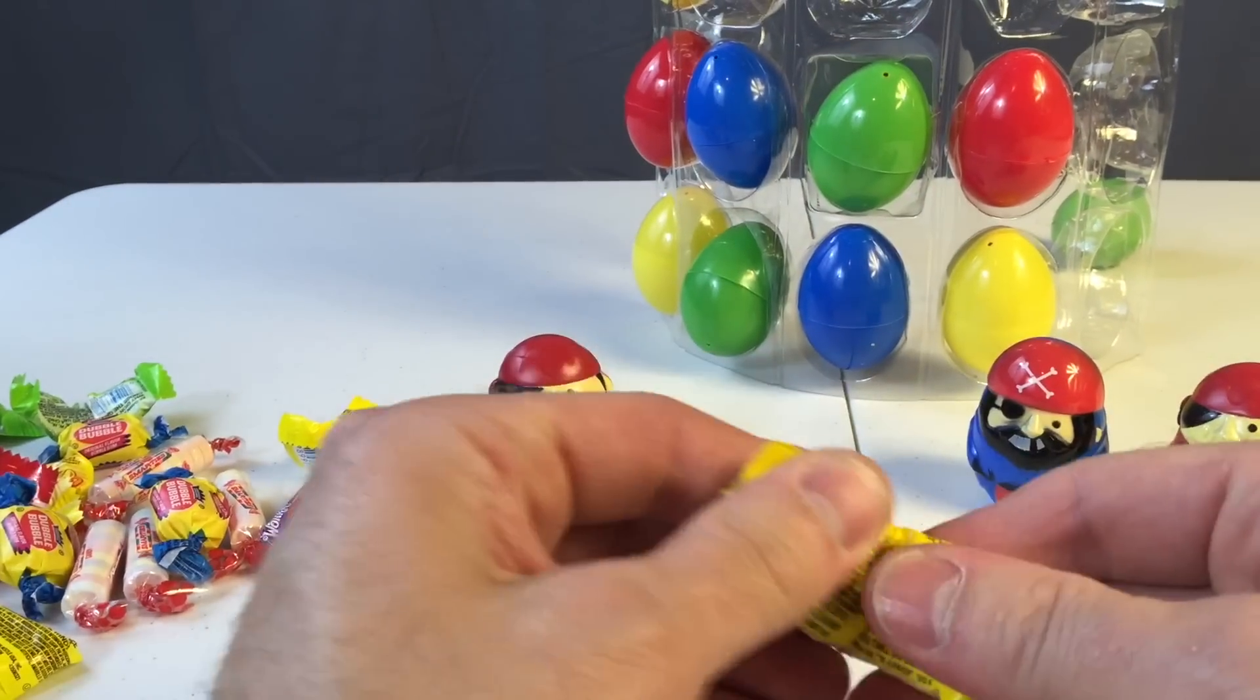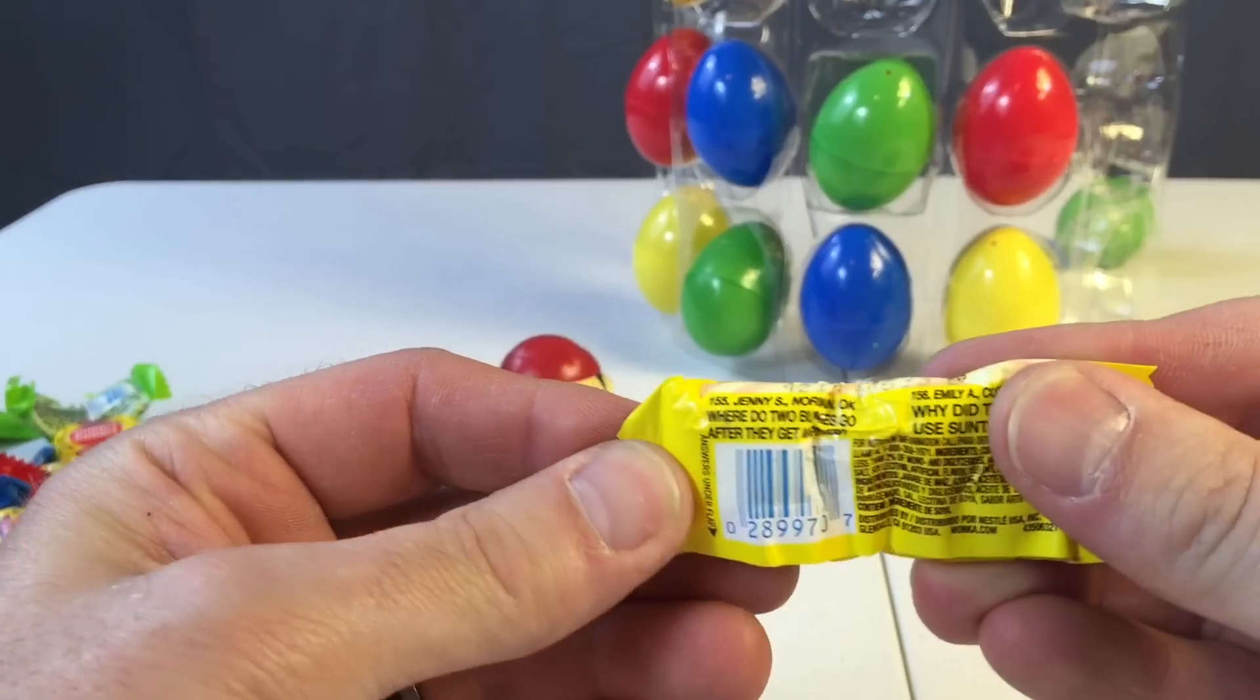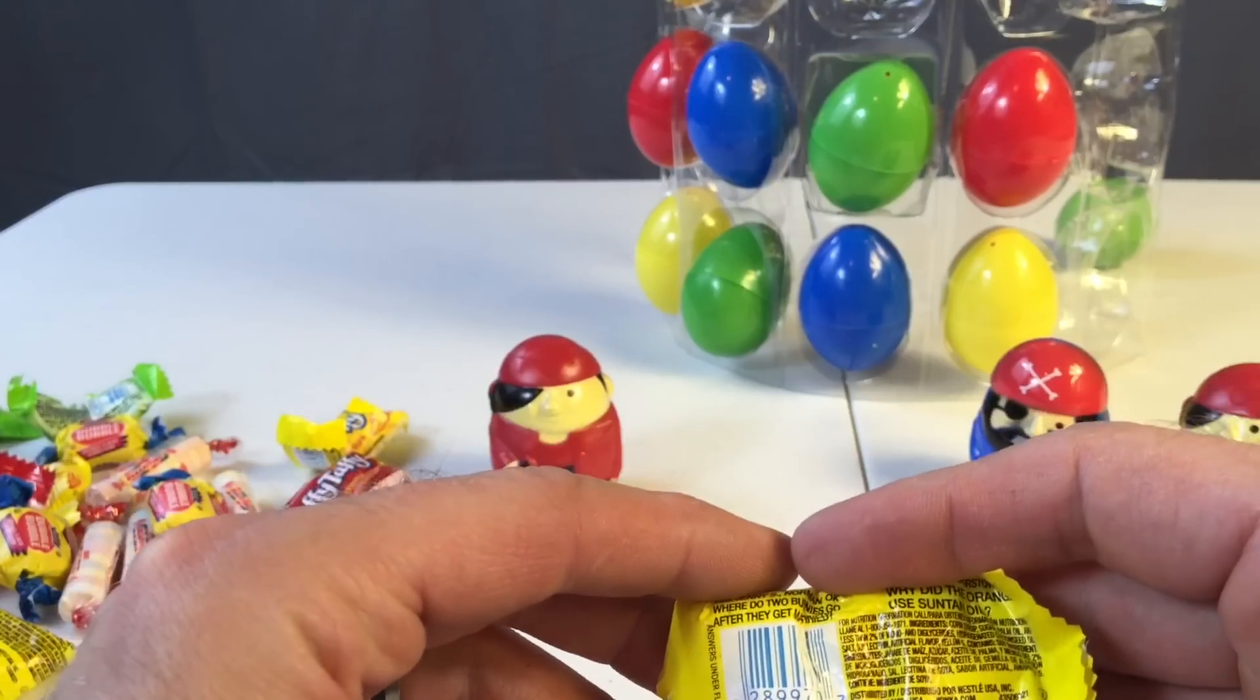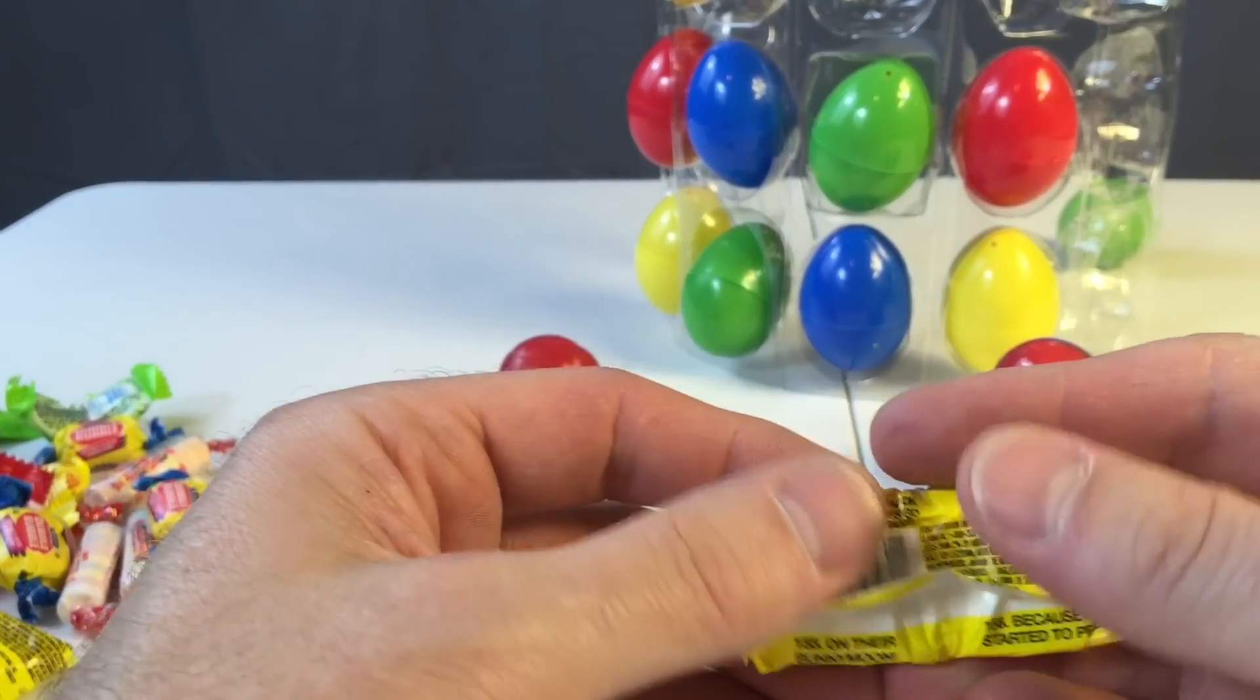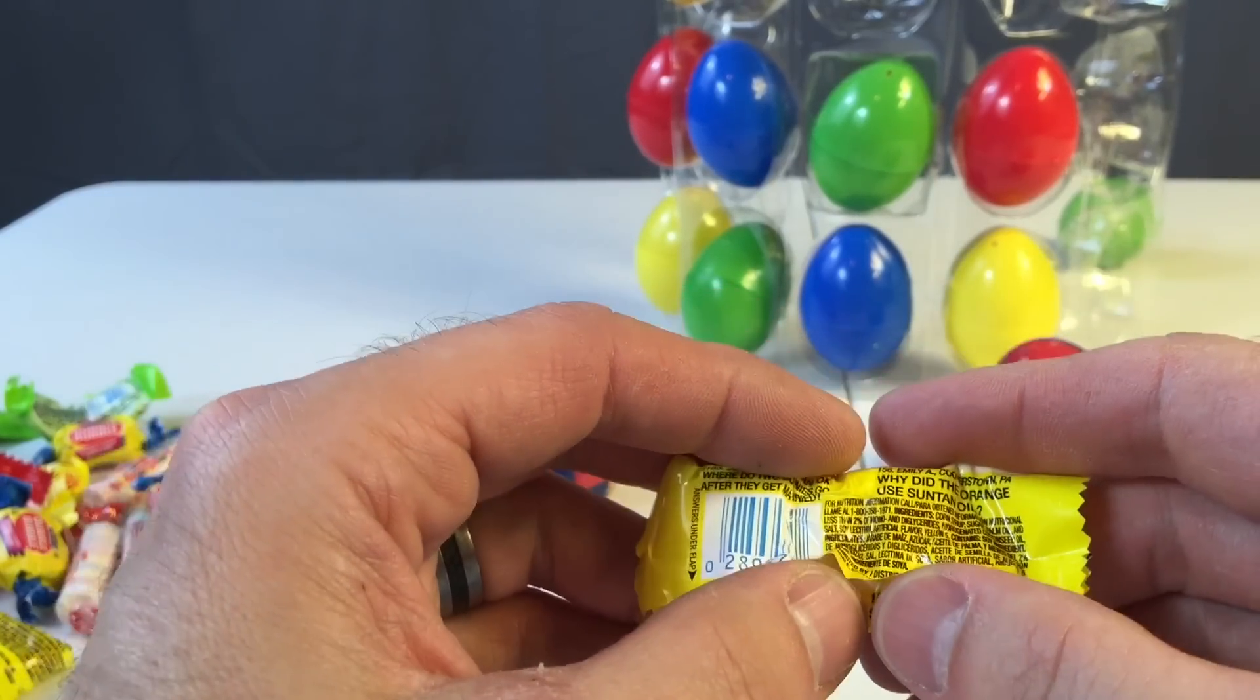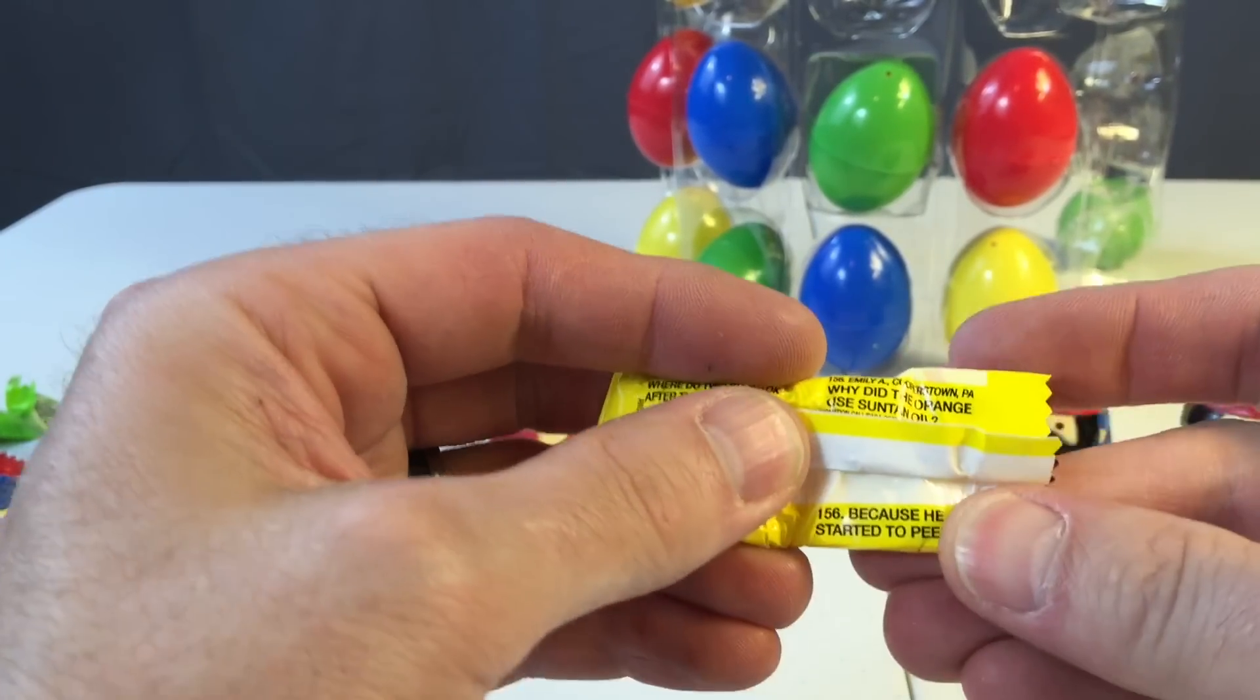Laffy Taffy. Where do two bunnies go after they get married? On their bunny moon. What did the orange use? Why did the orange use suntan oil? Because it started to peel. Yep, that was right.